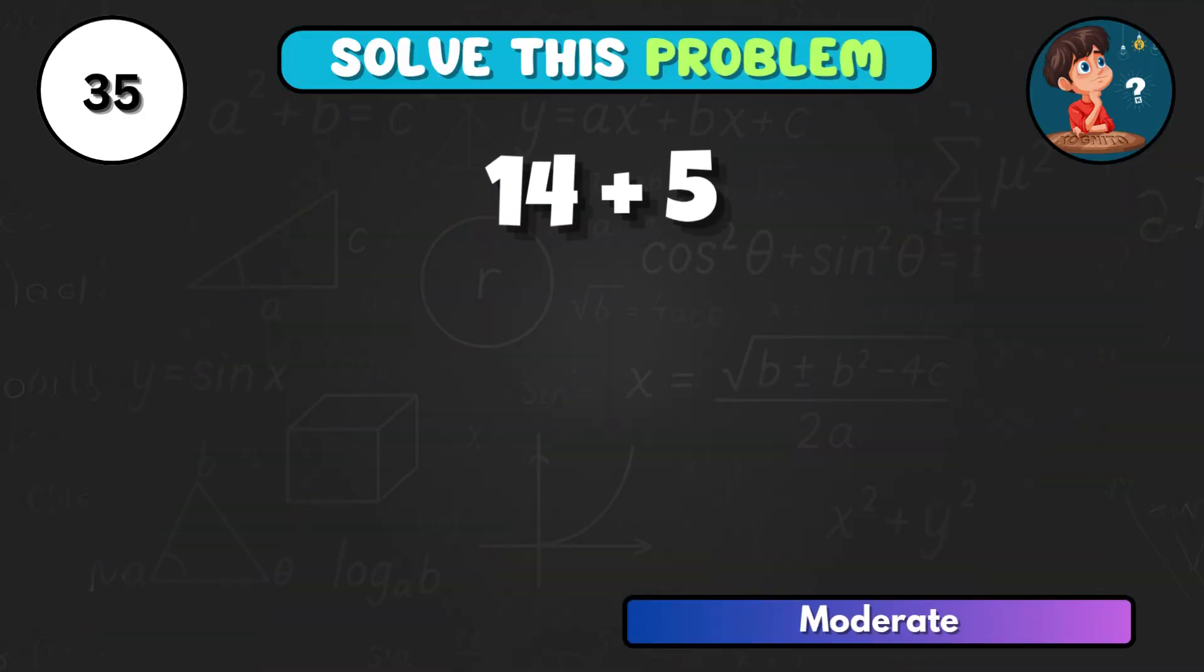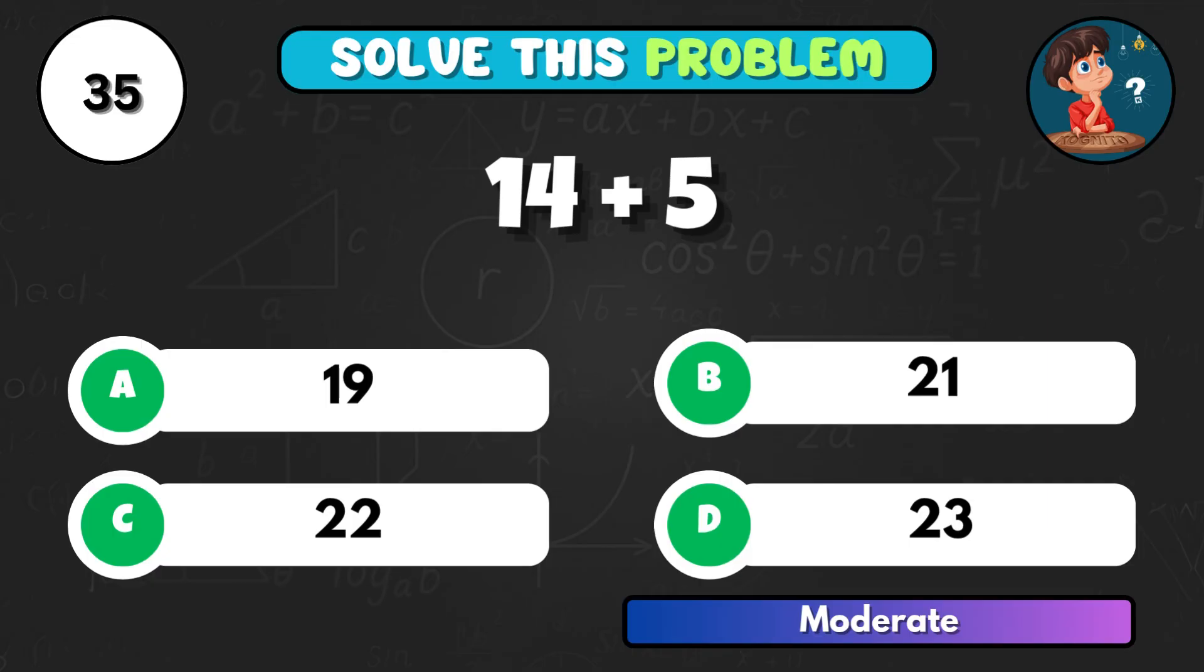Add 14 and 5, what number do you get? That's A, and it makes 19.